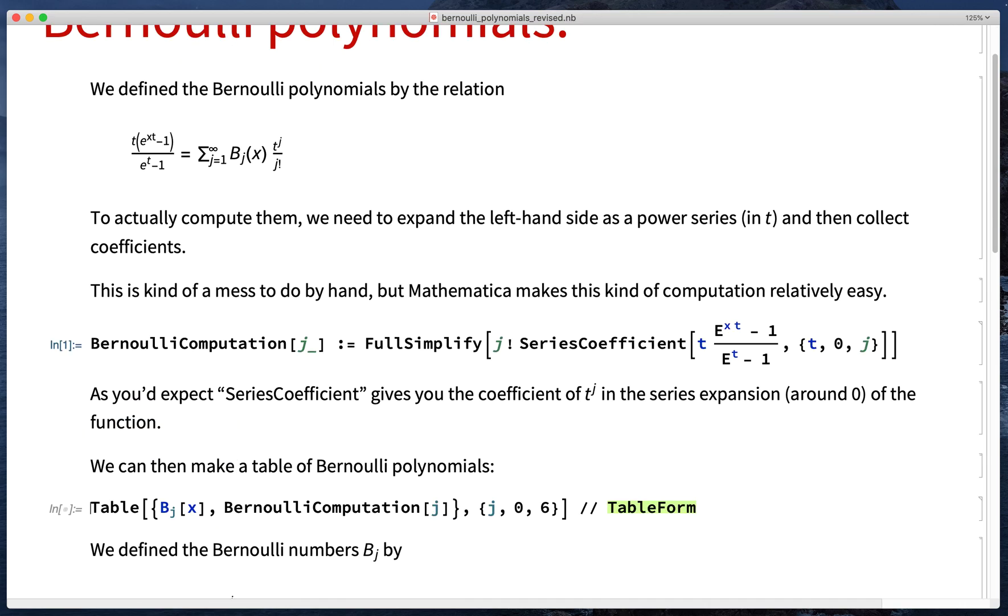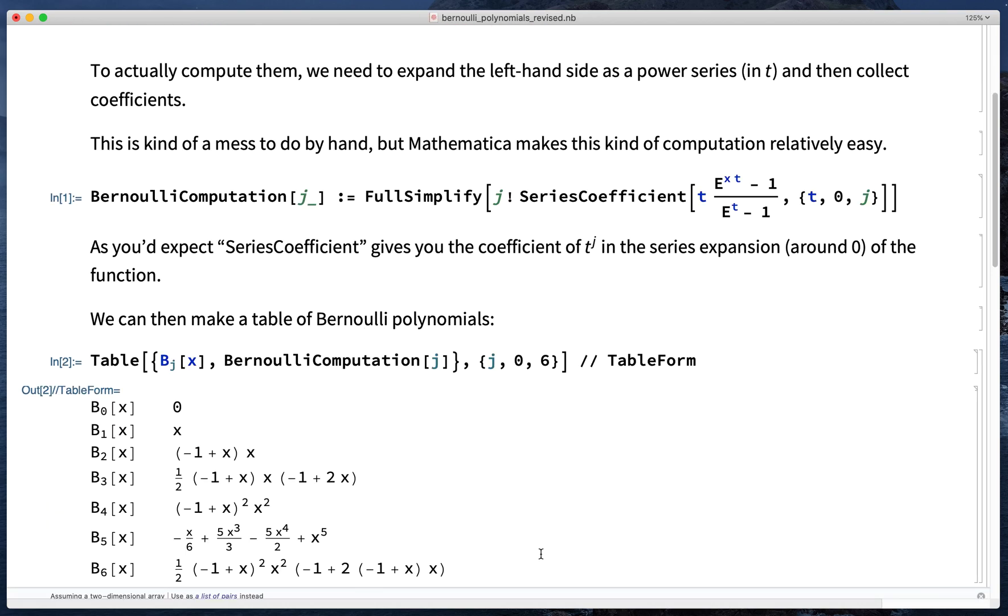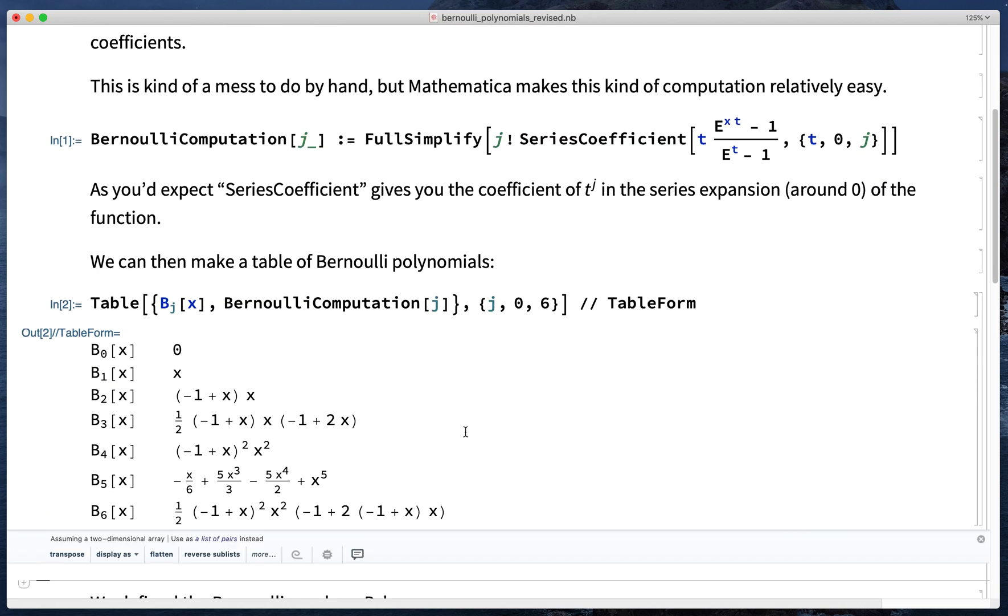We can use this to make a table of the first couple Bernoulli polynomials. So you see that B_0 is 0, B_1 is x, B_2 is x squared minus x, and so on and so forth. FullSimplify will factor the polynomial where it can.